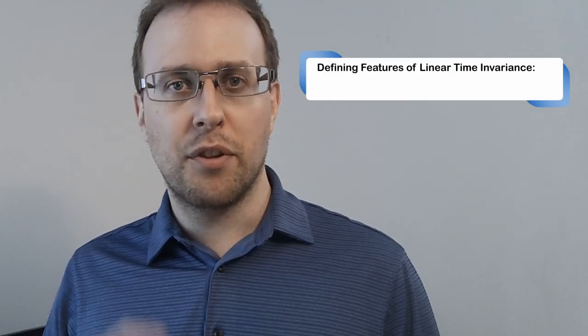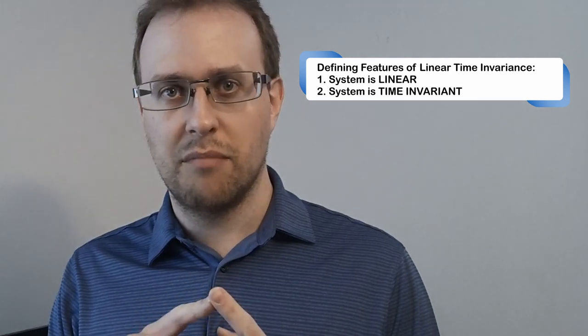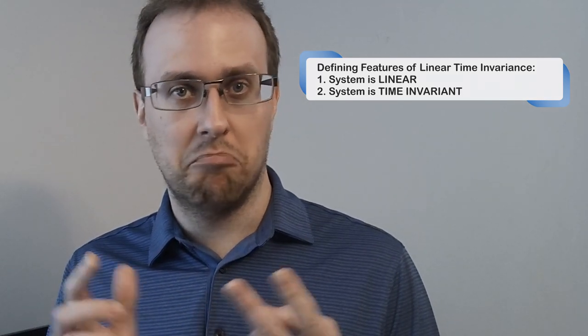It's easy to remember the two defining properties for a linear time invariant system. First, it's linear, and second, it's time invariant. That's it really. But what do these two properties mean?